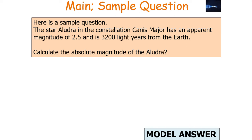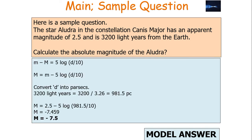Here is a sample examination question. The star Eludra in the constellation Canis Major has an apparent magnitude of 2.5 and is 3,200 light years from Earth. Calculate the absolute magnitude of Eludra. Using the equation small m minus big M equals 5 log(D/10), rearranged to make big M the subject, and converting D into parsecs: 3,200 ÷ 3.26 gives approximately 981.5 parsecs. Substituting into the equation gives an absolute magnitude of minus 7.5, which means it is a very powerful star, since a negative value means very bright on this scale.